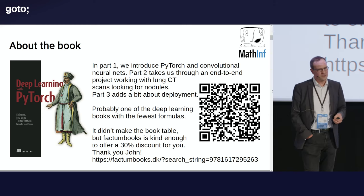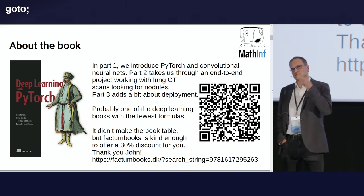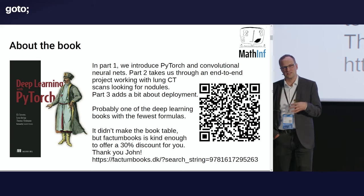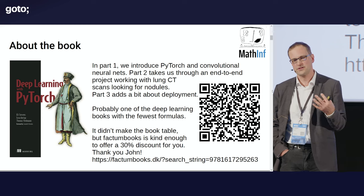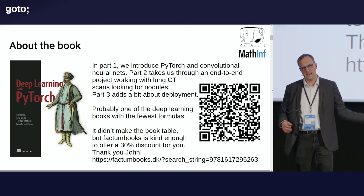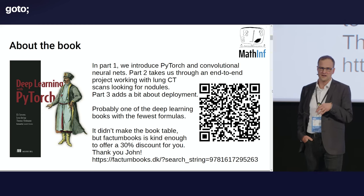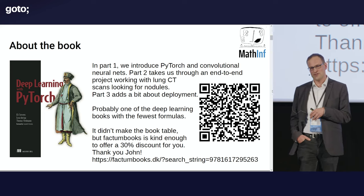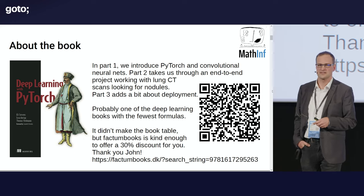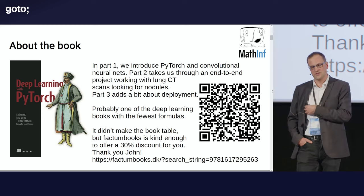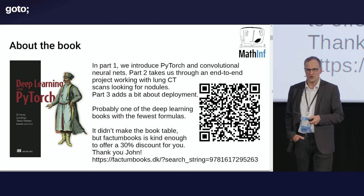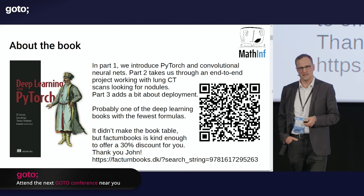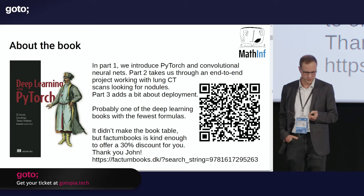About the book — a bit of advertisement — we aim to introduce PyTorch and convolutional neural nets for people that know some programming in Python. In part two, we take you through an end-to-end project where we take lung CT scans and look for lung cancer. We show you how to fall into some traps and also how to get out. We also cover how to deploy on your mobile phone or as a service. No formulas — and if you use the QR code, you get a 30% discount, which is usually hard to get for the hard copy in Europe.